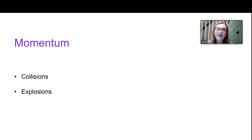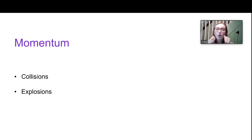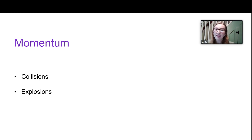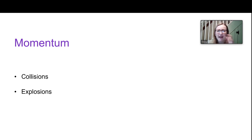Last but not least, another approach is using momentum. Momentum is a really useful approach when two objects are colliding and coming together, moving off in some direction, or when a system starts stationary and explodes outwards. In these cases, considering how momentum is conserved helps you find hidden information like velocities or the mass of an object. These are all good hints that momentum is likely to be a useful approach.